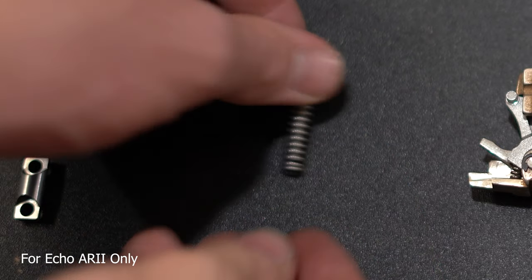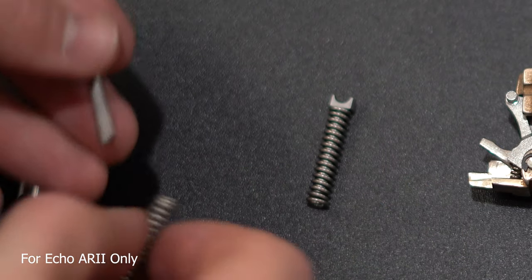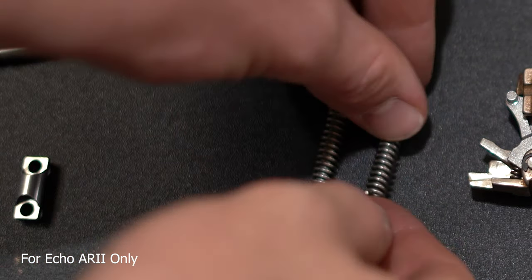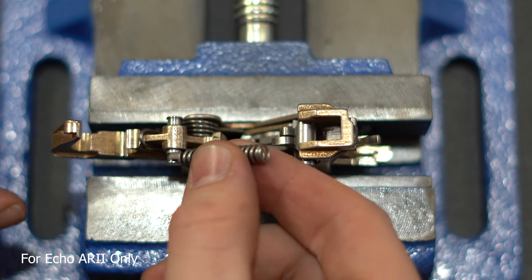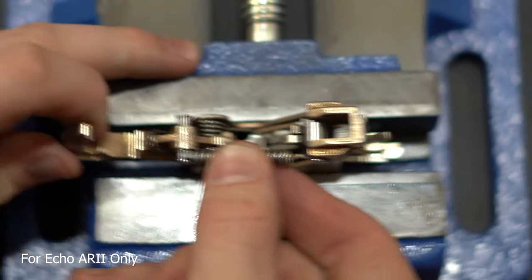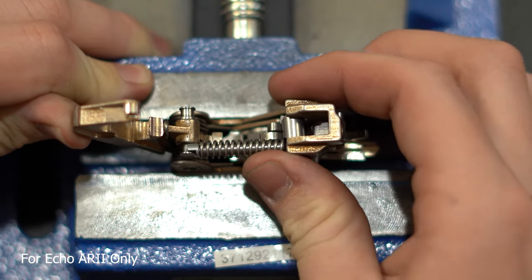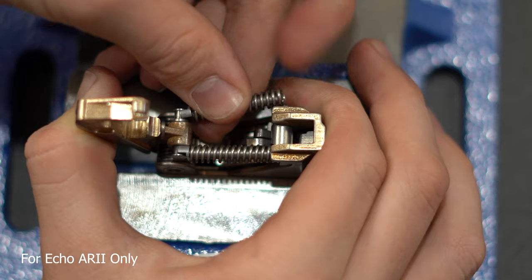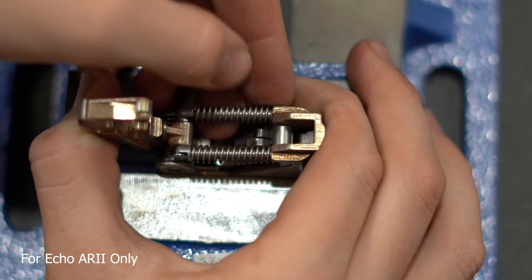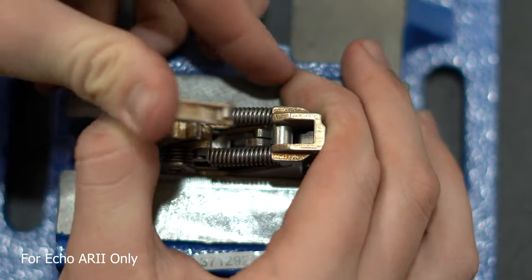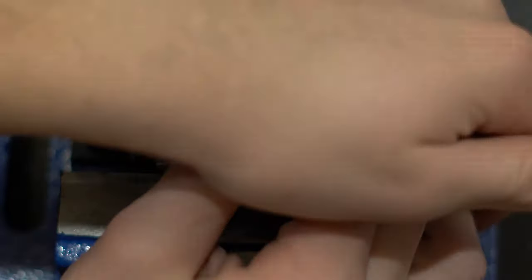Install the springs on the toggles. Apply pressure to the hammer and install the springs and toggles as shown in the video. Make sure the shelf on the toggle is facing outwards. Firmly press the hammer until it locks back into place.